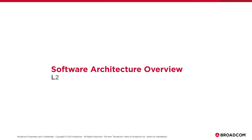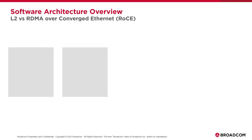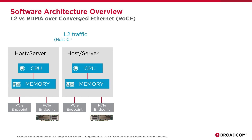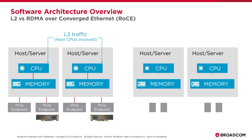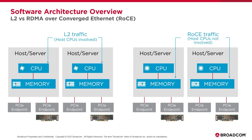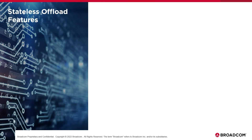Another high-performance network protocol supported by Broadcom adapters is called RoCE, which stands for RDMA over Converged Ethernet. RoCE is useful in applications that require very high performance and very low latency. The graphic on the left illustrates the standard Linux driver model, which can be very heavy lifting in terms of host CPU utilization and also will have higher network latency as compared to RoCE. The graphic on the right illustrates a RoCE implementation, which facilitates the ability of one server to write directly into the memory of the opposing server without even involving the host CPUs. This obviously benefits both system and network performance.